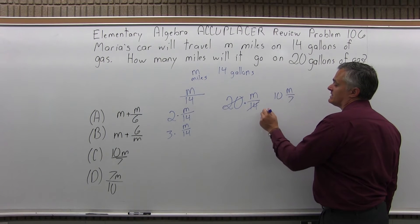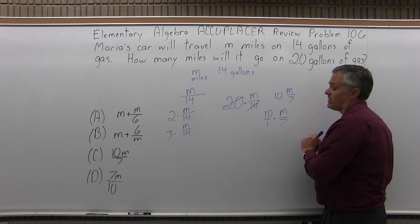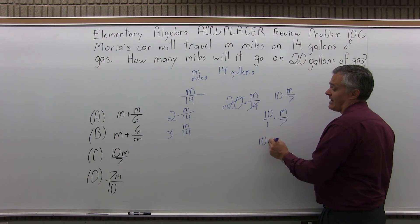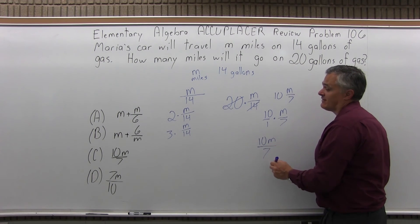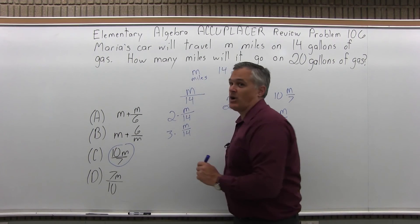Ten times M over seven. You can think of the ten as ten over one times M over seven. You're multiplying fractions. Top times top, ten times M is ten M. Bottom times bottom, one times seven is seven. So I can make a perfect match with option C.